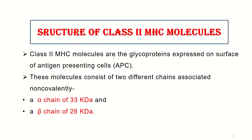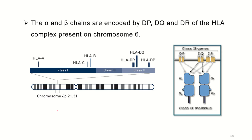Class 2 MHC molecules are glycoproteins expressed on the surface of antigen presenting cells, such as dendritic cells. These molecules consist of two chains: an alpha chain and a beta chain. Both chains are encoded by the DP, DQ, and DR regions of the HLA complex, which is located on chromosome 6.